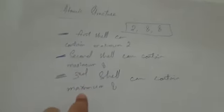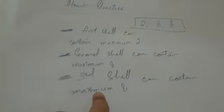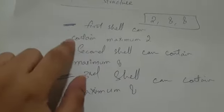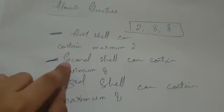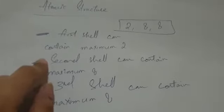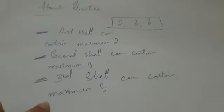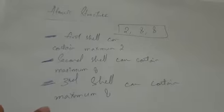The third shell can contain 8 electrons, but if the first shell is not complete, you are not allowed to go to the second shell. If the second shell is not complete, you're not allowed to go to shell number three.